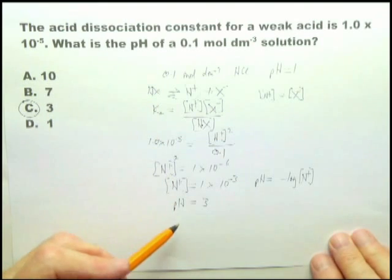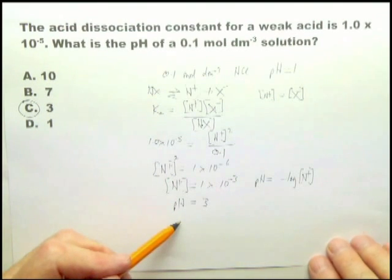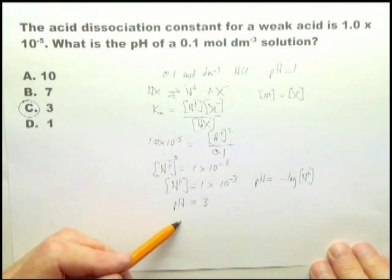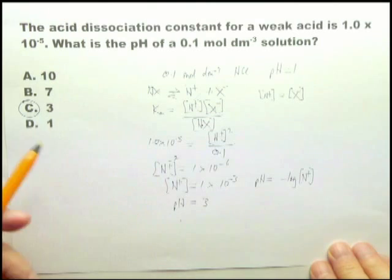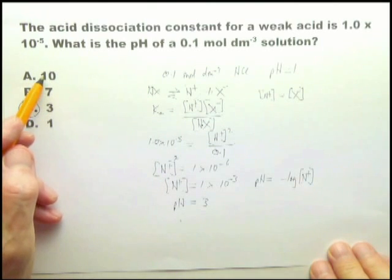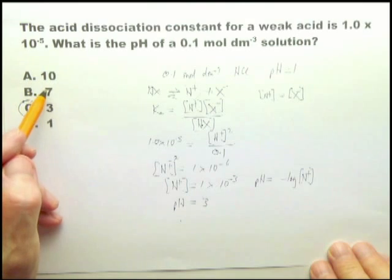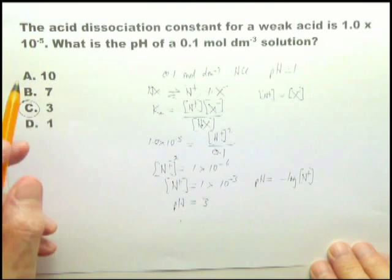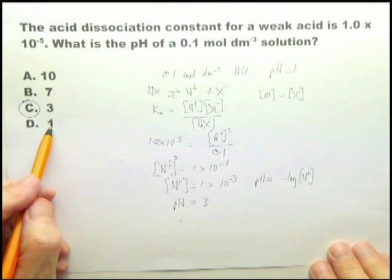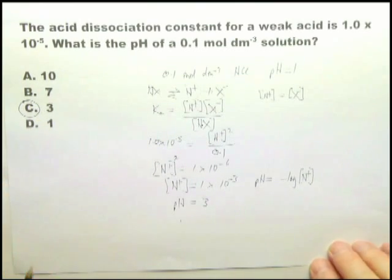The calculation confirms pH = 3. In Paper 1 you wouldn't necessarily do this calculation, but you might be asked to do it in Paper 2. The quick route is: one option is alkaline, one is neutral, and one is the pH of a very strong acid — not a weak acid. Therefore it leaves you with C.